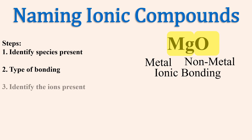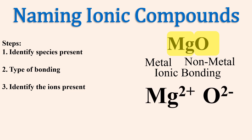Next, we can identify the ions present. Magnesium, the alkaline earth metal, is the cation, Mg2+, and oxygen is the anion, O2-.